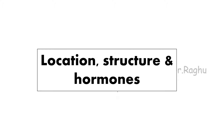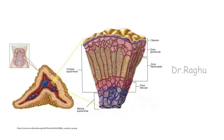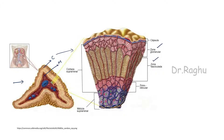Let's discuss location, structure, and the hormones produced by the adrenal gland. The adrenal gland is situated at the superior poles of each kidney. When we take a cross section of the adrenal gland, we can see that it is divided into two portions: the outer portion called the cortex and the inner portion called the medulla. The cortex is further divided into three layers — from top to bottom: zona glomerulosa, zona fasciculata, and zona reticularis.